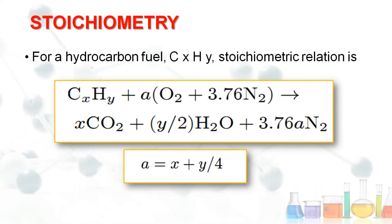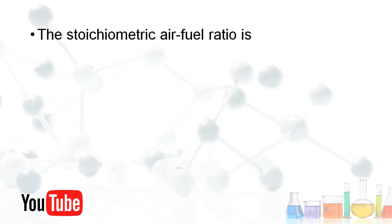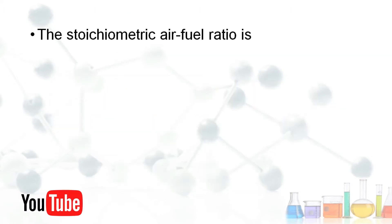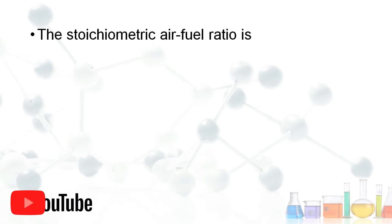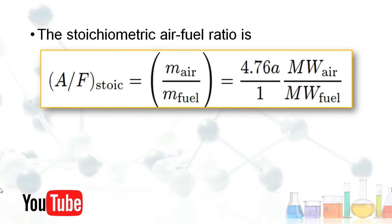To find X, Y, A and other values, we optimize A as: A = X + Y/4. The stoichiometric air-fuel ratio defines the ratio between the mass of air and the mass of fuel.